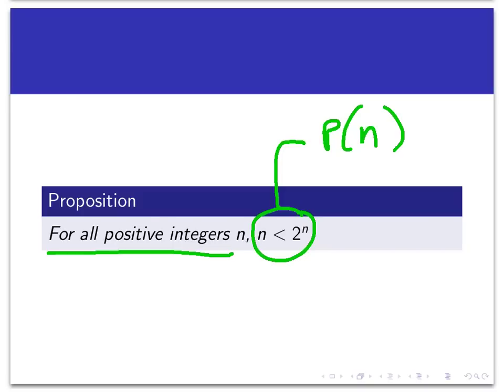As with all proofs by induction, we need to do two things. We need to establish the base case, prove that P of 1 is true, and then prove the inductive step. I want to assume P of k is true and then prove that P of k plus 1 is true to get from one step to the next.